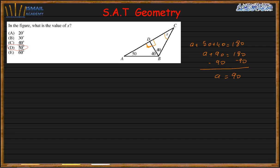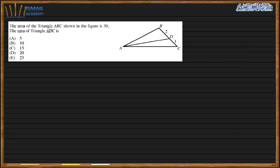Next question. The area of triangle ABC shown in the figure is 30. Let me draw the height here. This is the height of the triangle ABC. We know that the height is perpendicular to the base. Let's name this height as h.